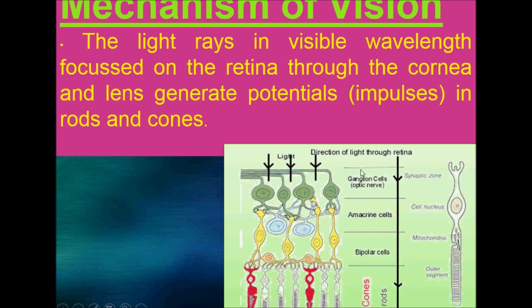The action potential is further conducted by the optic nerve to the visual cortex area of the brain, where the neural impulses are analyzed and the image formed on the retina is recognized — that is why we see any object in the erect form.